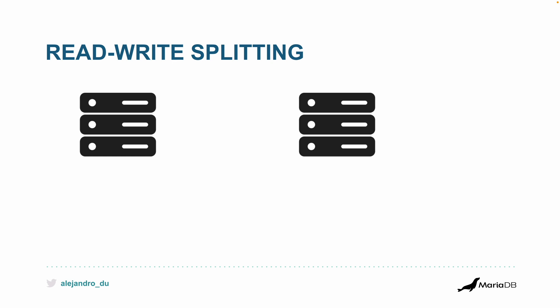You activate replication, configure and enable MariaDB replication. That means that when you write data in the primary node, it gets automatically and almost instantly replicated in the other node — the replica. So you have data in both automatically.